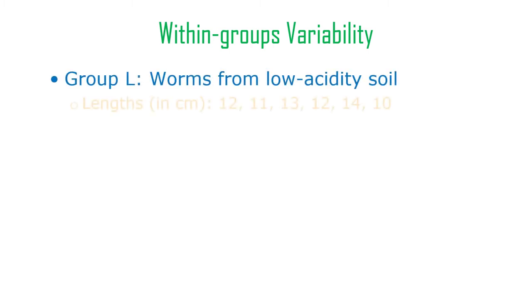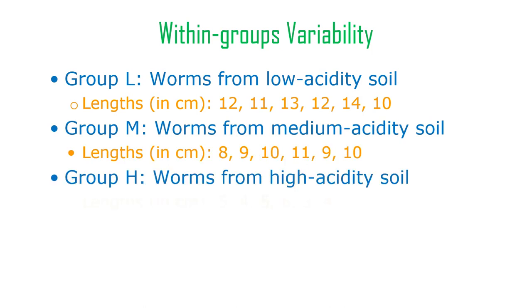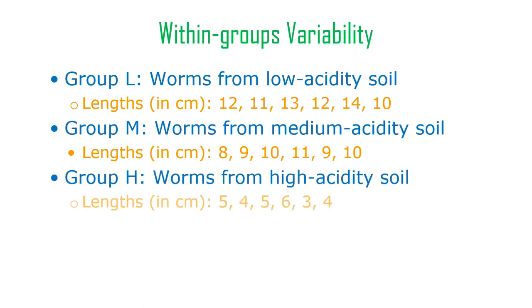Let's say we have three groups of worms: L, M, and H — L for low acidity, M for medium acidity, and H for high acidity.